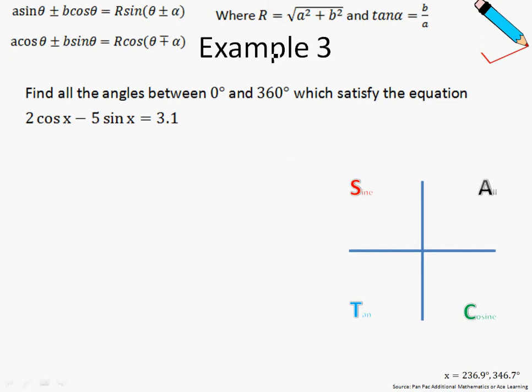In example number 3, we are asked to find all the angles between 0 degrees and 360 degrees which satisfy the equation 2 cosine x minus 5 sine x equals 3.1.